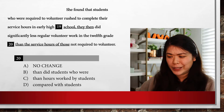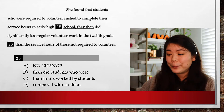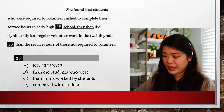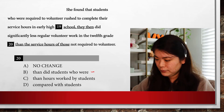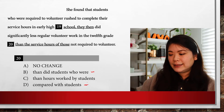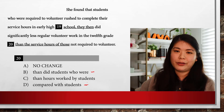Right off the bat, hopefully you can tell that the underlined portion there does not sound right — that is not correct. But there are two answers here that students are between: it is B and D. B says 'than did students who were' and D says 'compared with students.' Many, many students thought these two were identical. So what's the problem?